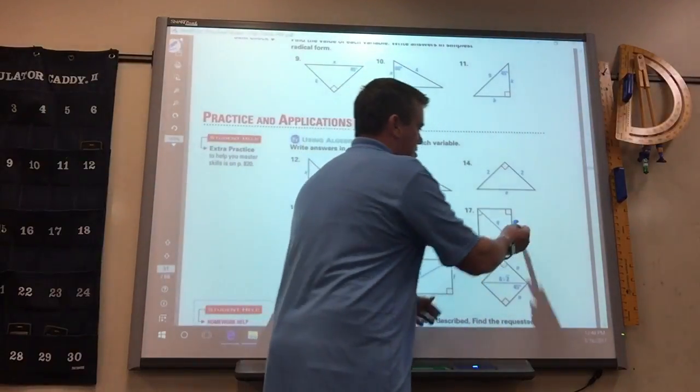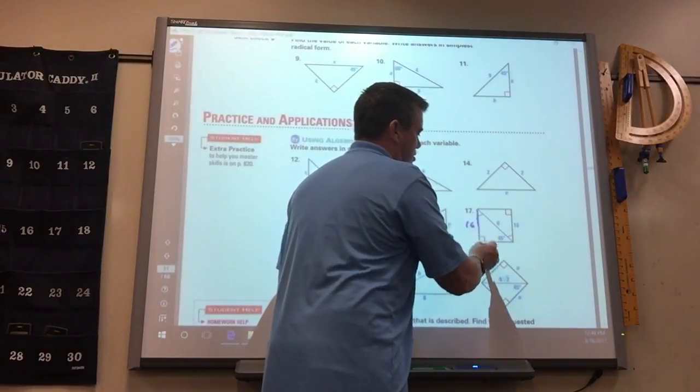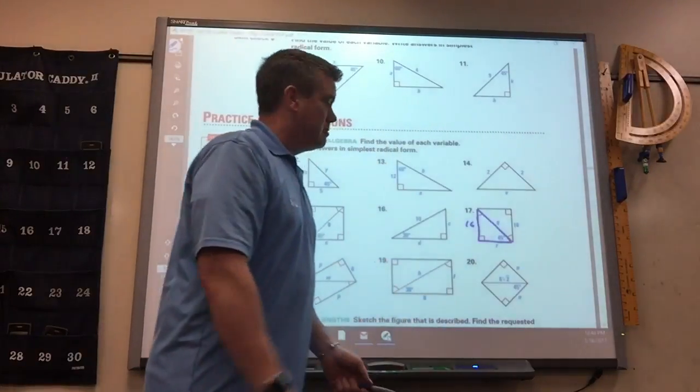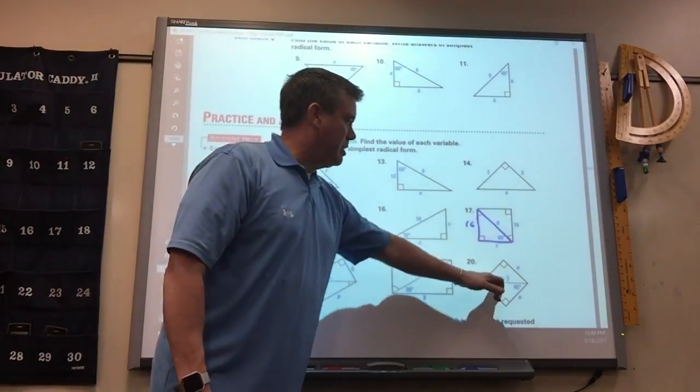It's just, since this is 16, so is that, so you just use this triangle to find Q and R. Same thing here.